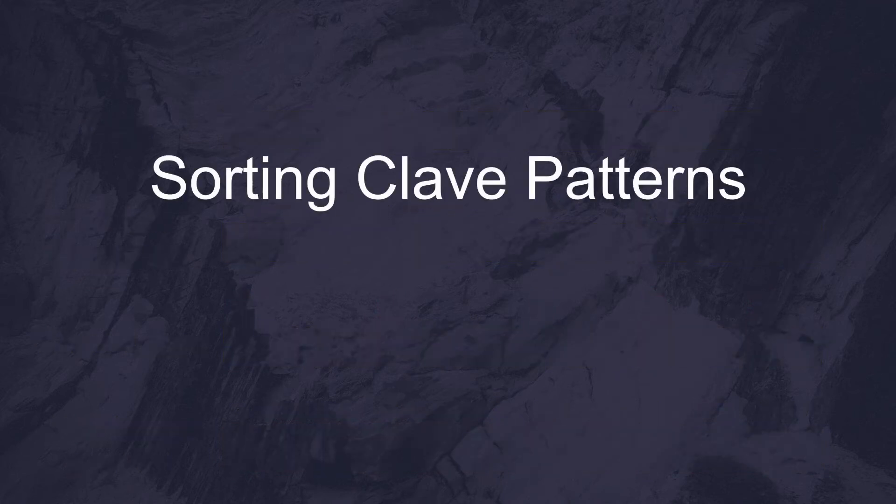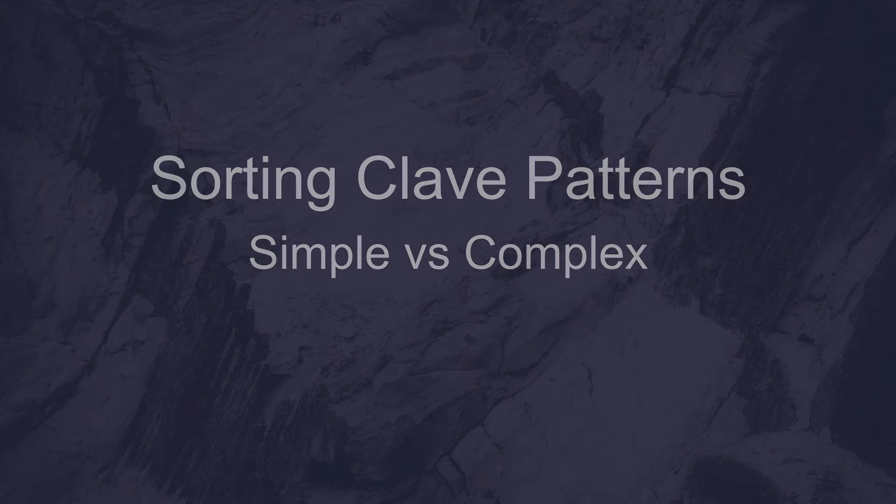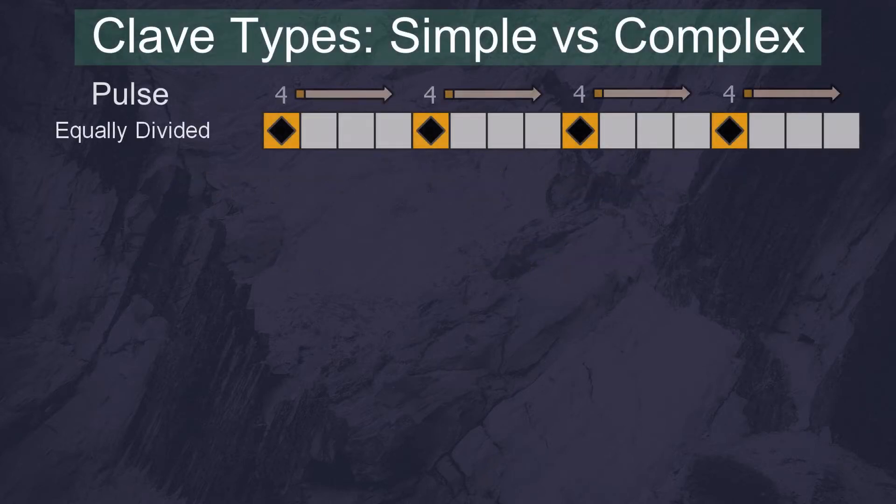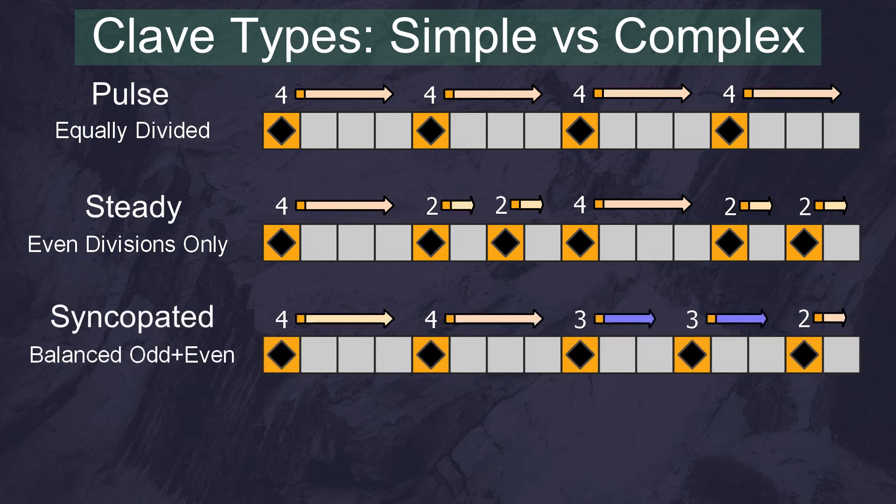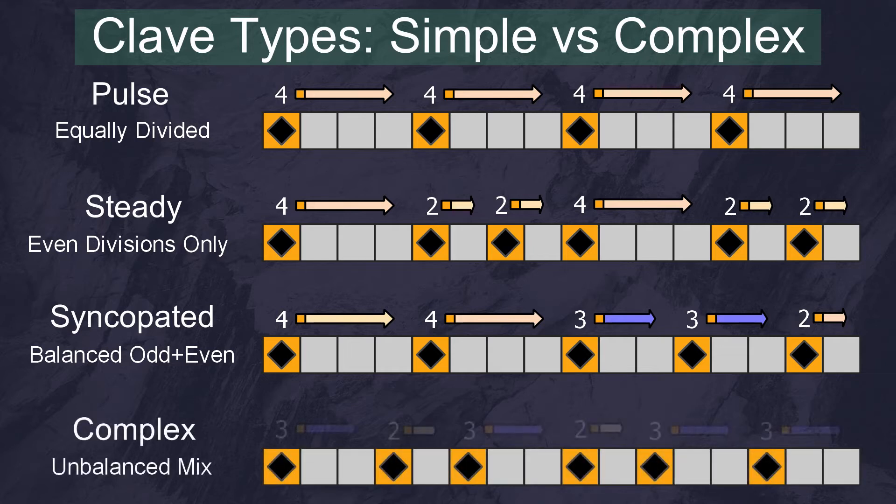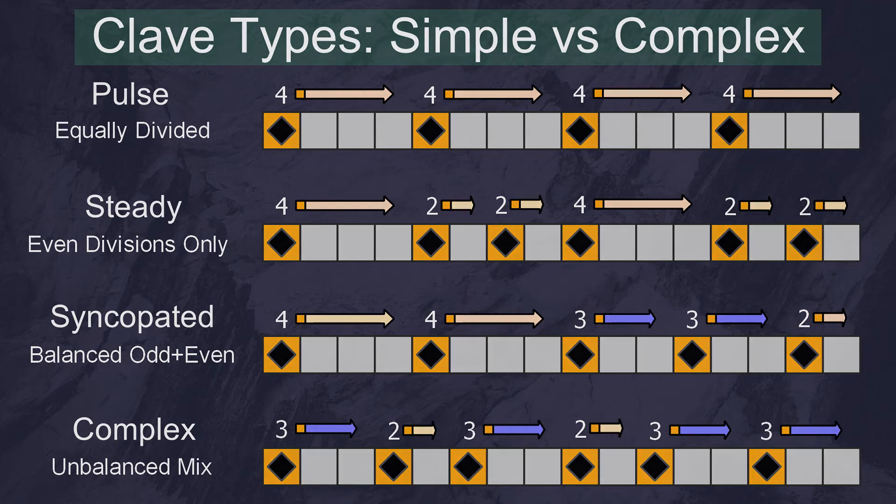There are a few different types of clave patterns, but it helps to think of them in terms of how simple or complex they are. Dividing the bar evenly will give us a regular pulse. Using only the even divisions of the bar will give us a steady beat, but not quite a pulse. Using a balance of even and odd divisions will create syncopation. And using an unbalanced mix of even and odd will sound complicated and overwhelming. By describing the balance between simple and complex, we can tune how we want the rhythm to sound.